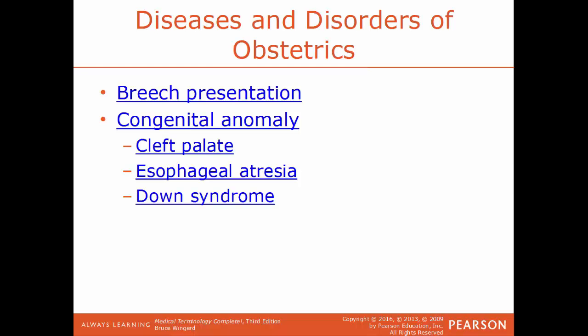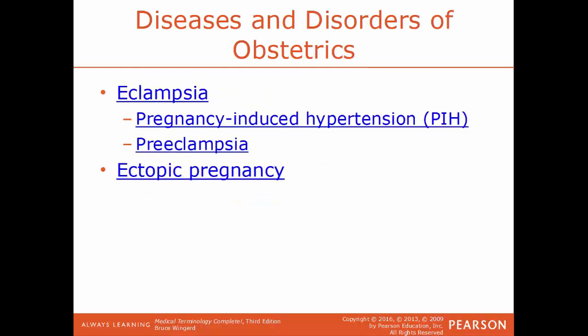Common examples of congenital anomalies: cleft palate is where the roof of the mouth doesn't fuse all the way together, leaving a space. Esophageal atresia is where the esophagus, instead of connecting to the stomach, ends up as a closed tube. Down syndrome is a congenital genetic defect where there is an extra chromosome in every cell — normally 46 chromosomes, people with Down syndrome have 47. Eclampsia, also called PIH or pregnancy-induced hypertension, is a life-threatening complication of pregnancy where the woman develops very high blood pressure, often leading to convulsions and coma.